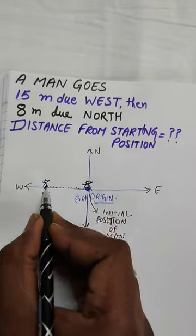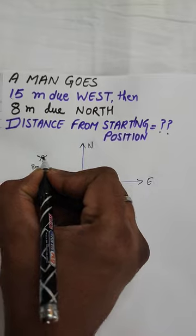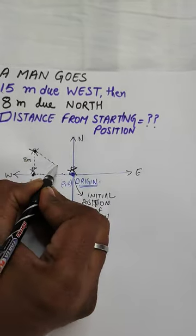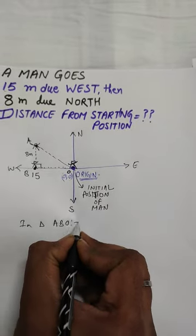We can just show it as it is. Now going north from here, that is going upward. The 8-meter movement is done. We can see a right angle triangle is formed here in triangle ABO.